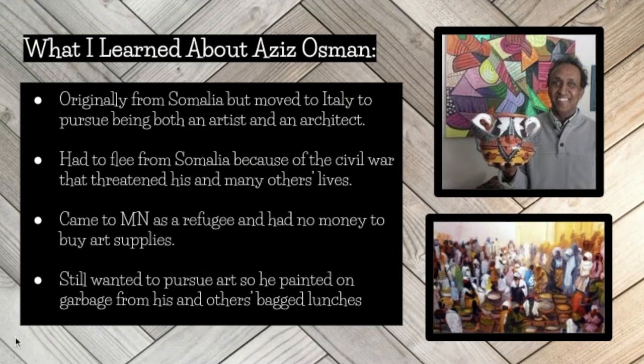When Osman first moved to Minnesota, he and his family didn't have enough money to buy art materials or art supplies. So what he would do is collect garbage from his and other people's bagged lunches, and he would paint on cardboard boxes from cereal or milk cartons, or use brown paper bags as his canvases for his paintings.